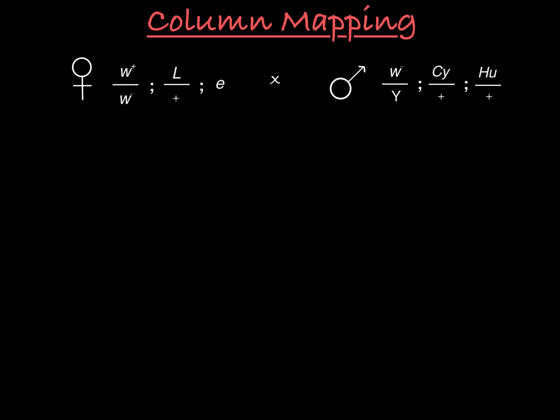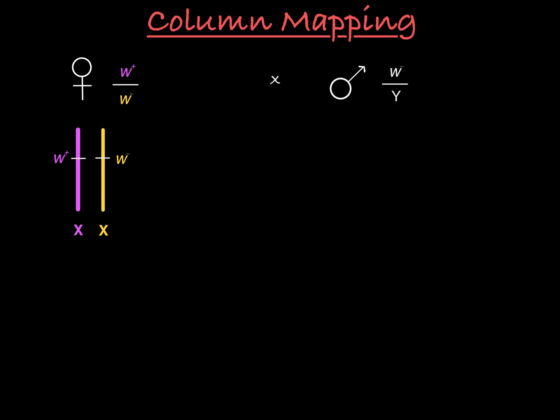As a starting point, let's remind ourselves what the chromosomes look like for these parents by drawing them below the genotypes. Let's just focus on the sex chromosomes for now. We see that the only gene of interest on the X chromosome is white. The female has two X's, one with the wild type W plus allele and one with the mutant W minus allele. The male has a single X chromosome carrying the W minus allele, paired with a Y chromosome.